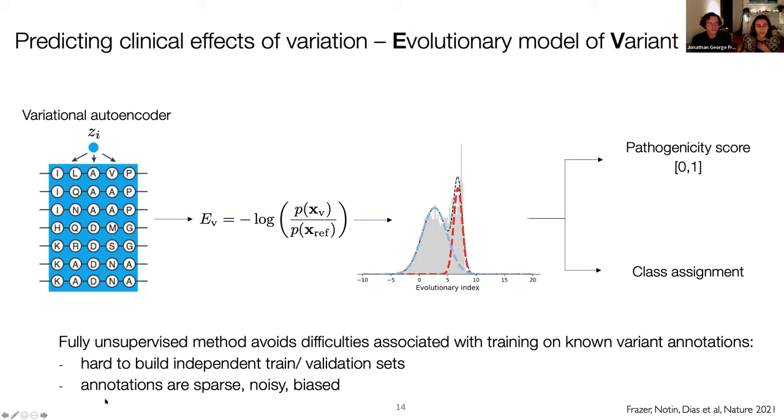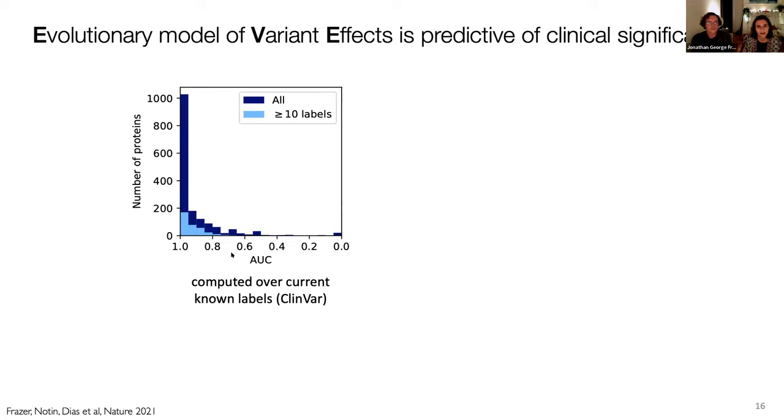So with a model that is unsupervised, we sort of avoid this problem. And also, we know that these labels are, as I discussed in the beginning, extremely sparse, and they are noisy and biased. So it's also problematic to build models that train on those. So basically, we avoid these difficulties by having a model that's purely unsupervised. So we applied this model to 3,200 proteins that we know are involved in disease.